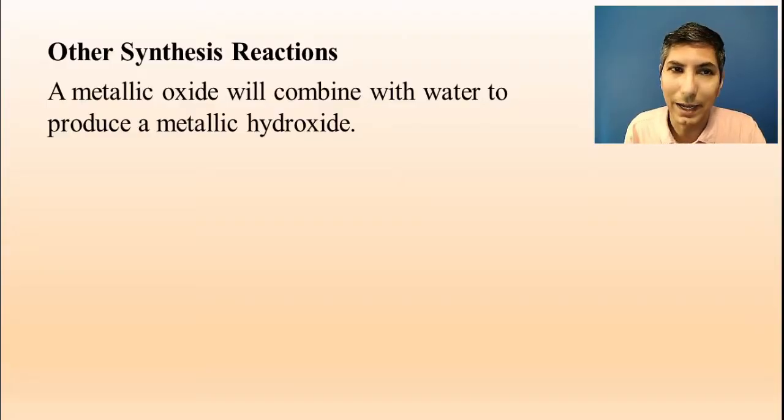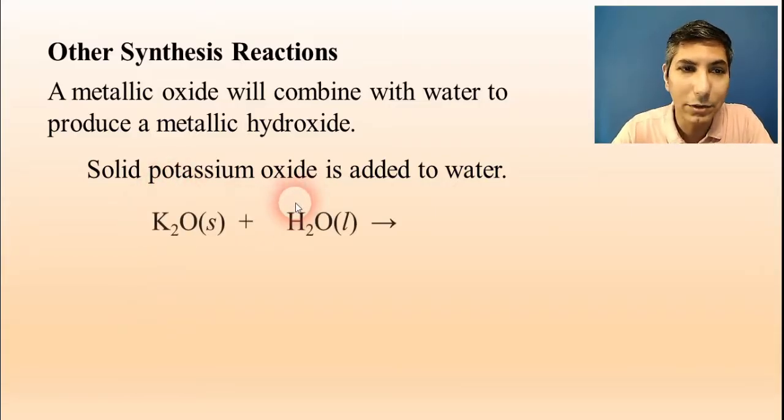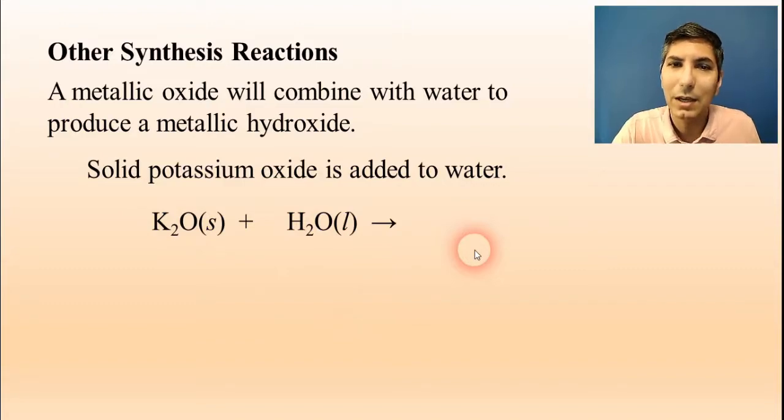For example, you need to know that a metallic oxide is going to combine with water to produce a metallic hydroxide. So that means that if you have a case where you're adding solid potassium oxide to water, well, you have to know how to write the formulas for this. Potassium oxide is K2O solid, and then water is H2O, and our product is going to be a metallic hydroxide. Hydroxide means it ends with OH, and the metallic part of that means that the metal, which is the potassium in this case, is going to be your cation on your product. So the metallic hydroxide is potassium hydroxide.